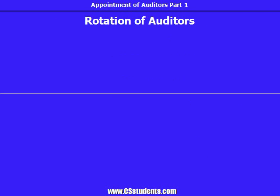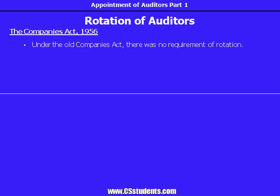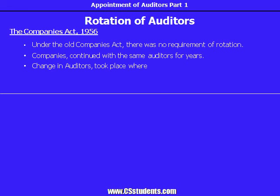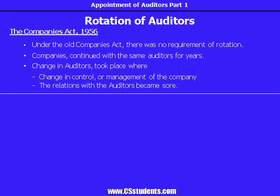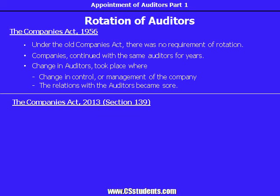Now we come to the rotation part. Rotation means the auditor shall mandatorily be changed by the company after a particular time period. Under the old Companies Act, there was no requirement of rotation. Most of the companies continued with the same auditors for years. Changes mostly took place wherever there was a change in control or management of the company, or the relations with the auditors became so. The Companies Act 2013 introduced this key provision of rotation by Section 139.